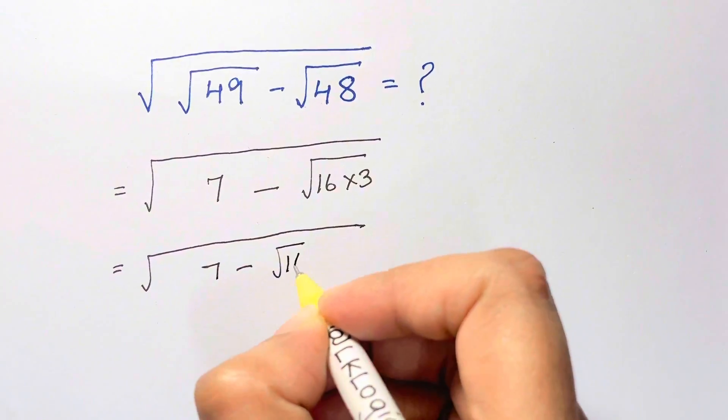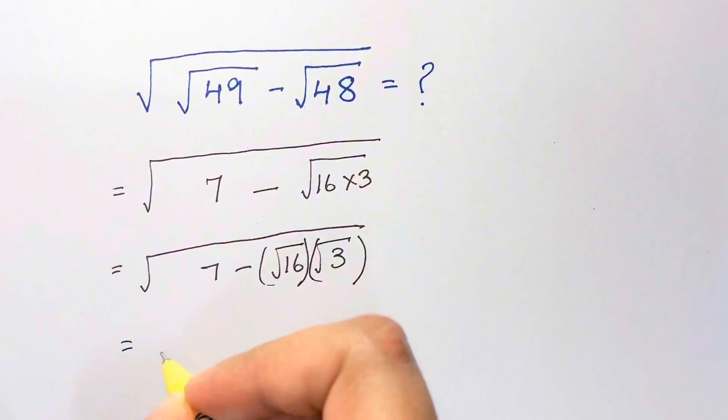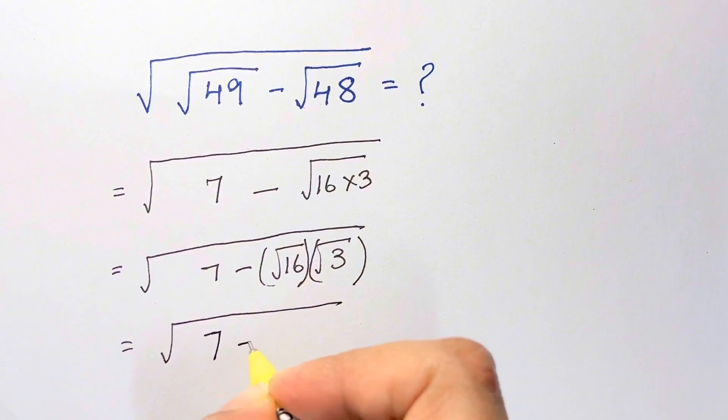Square root of 7 minus square root of 16 times square root of 3, which is equal to 7 minus, square root of 16 is 4, 4 root 3.